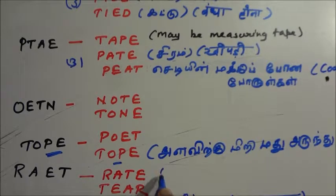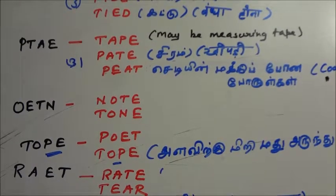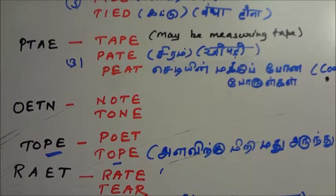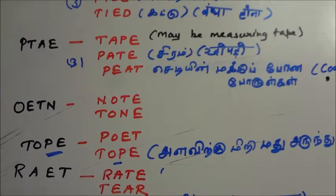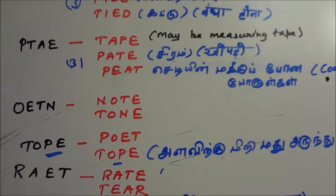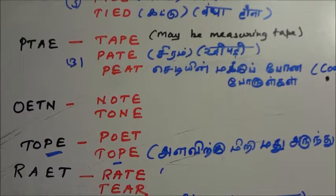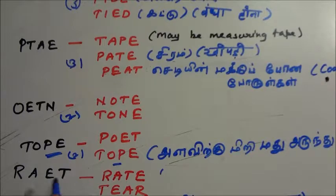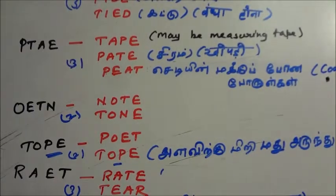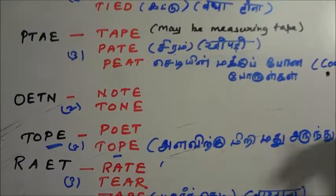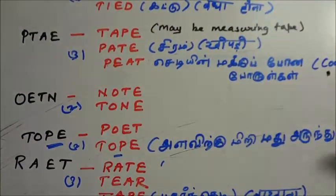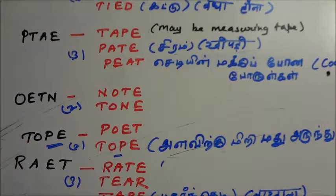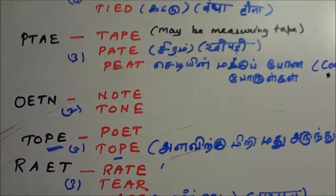R-A-E-T - we can form RATE (price of something), TEAR (to tear paper or bags), and TARE. From these words we can find three words here, two words there. Please remember the combination of these words so that it will be useful in examination. We don't need to find these words - in the options there will be one, two, three like that. How many words will be formed? If P-T-A-E combination comes, we can definitely find three words. Please remember these combinations.